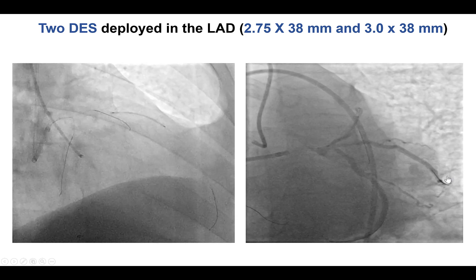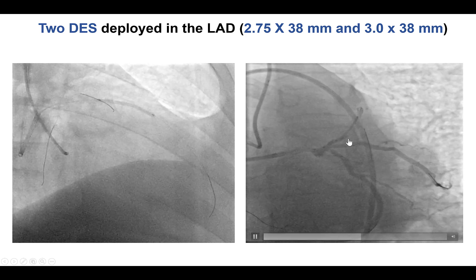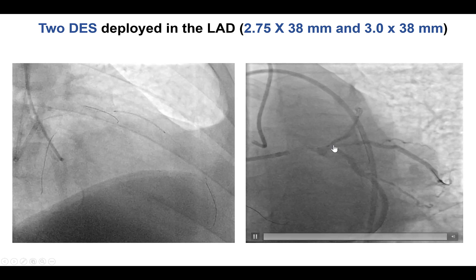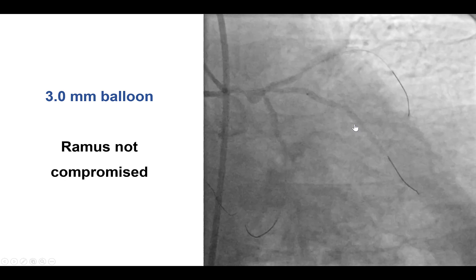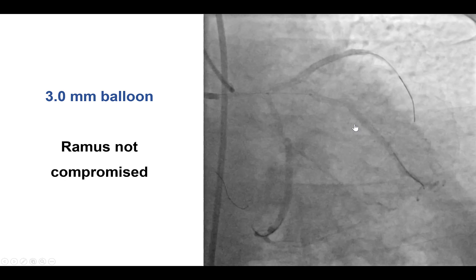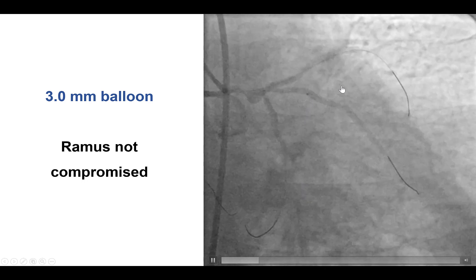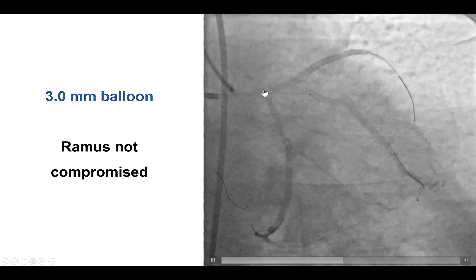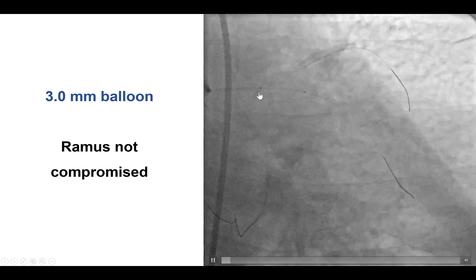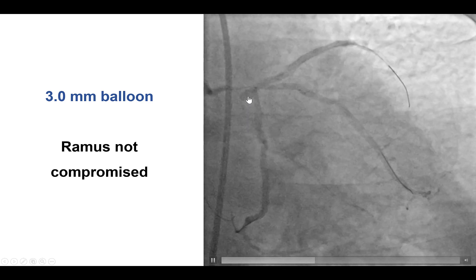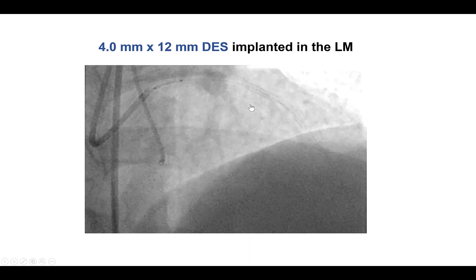We performed IVUS, which confirmed that we were actually within the distal true lumen, and then placed stents all the way from the ostium of the LAD into the mid-LAD, restoring flow without compromising flow in the ramus branch or the circumflex. Of note, we had to intermittently disengage the guide catheter to avoid deep engagement and ischemia, given the significant left main lesion.